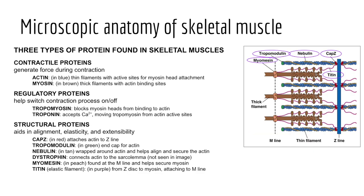The proteins of the sarcomere fall into three broad categories: contractile, regulatory, and structural proteins. Contractile proteins generate force during muscle contraction — these are actin (the thin contractile filament) and myosin (the thick contractile filament with golf club-like heads projecting outward). In generating force during contraction, actin and myosin connect together — the myosin head binds to a myosin binding site on actin and facilitates contraction by sliding past one another, with myosin heads pulling actin toward the M-line.